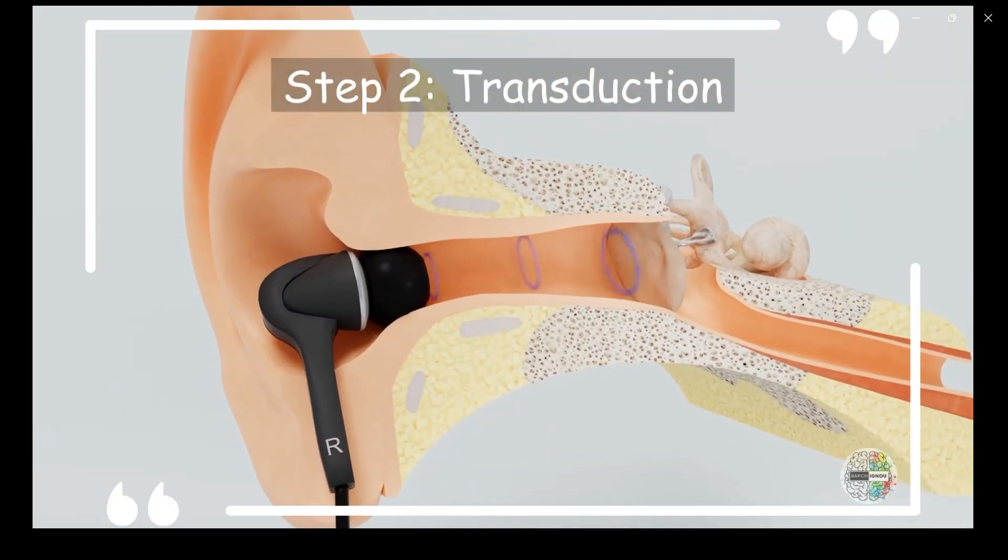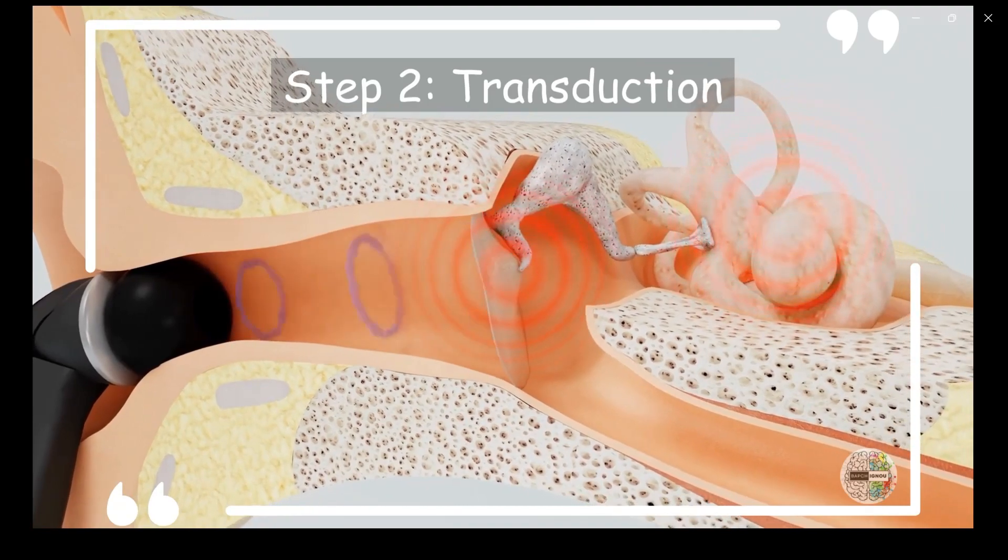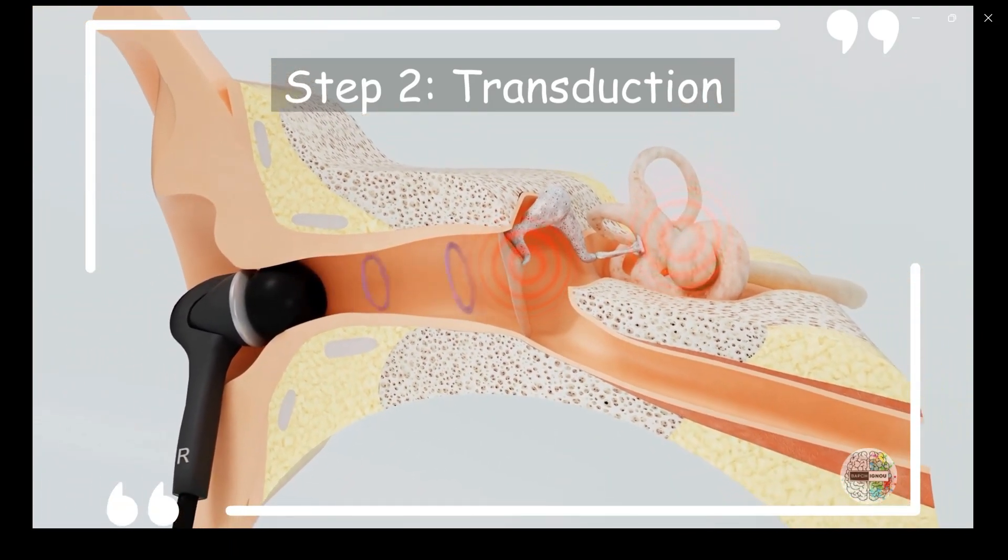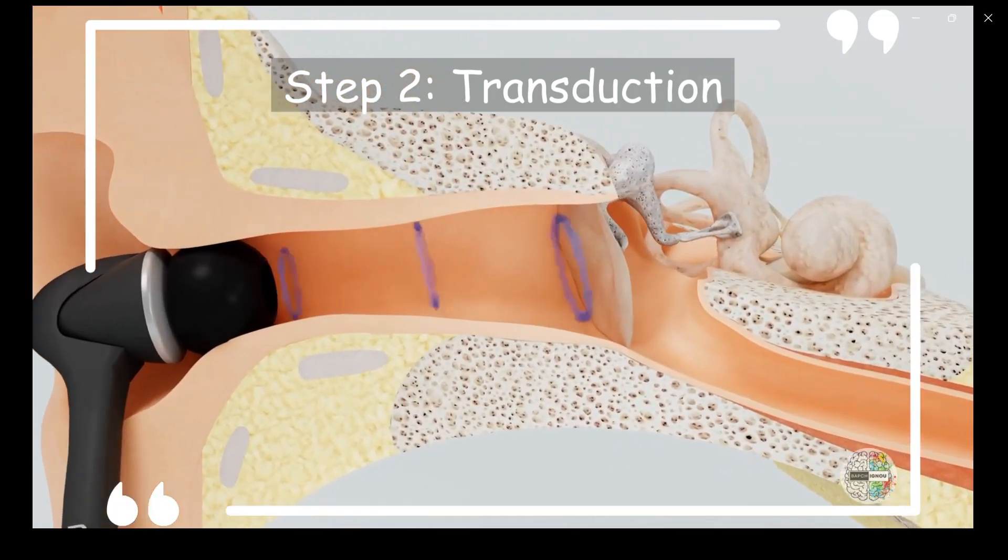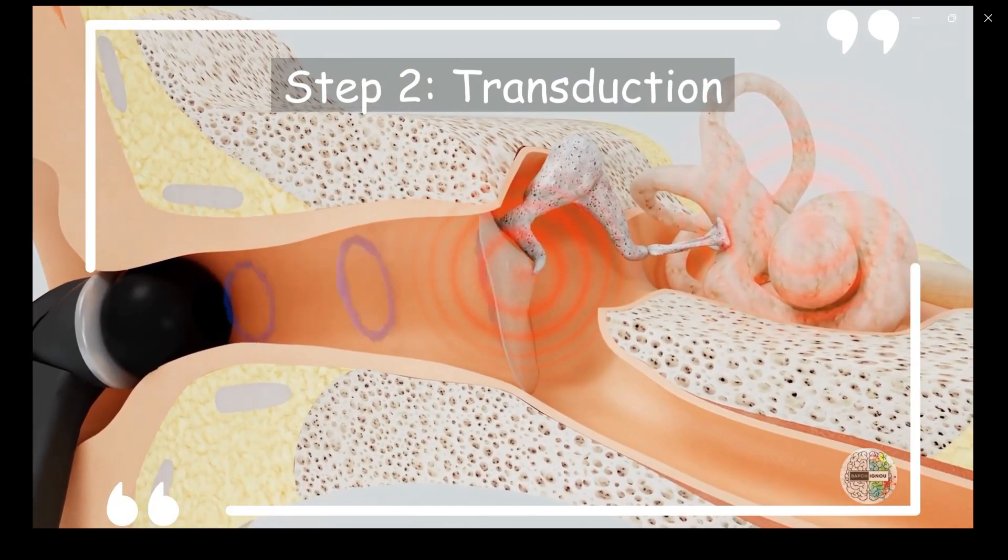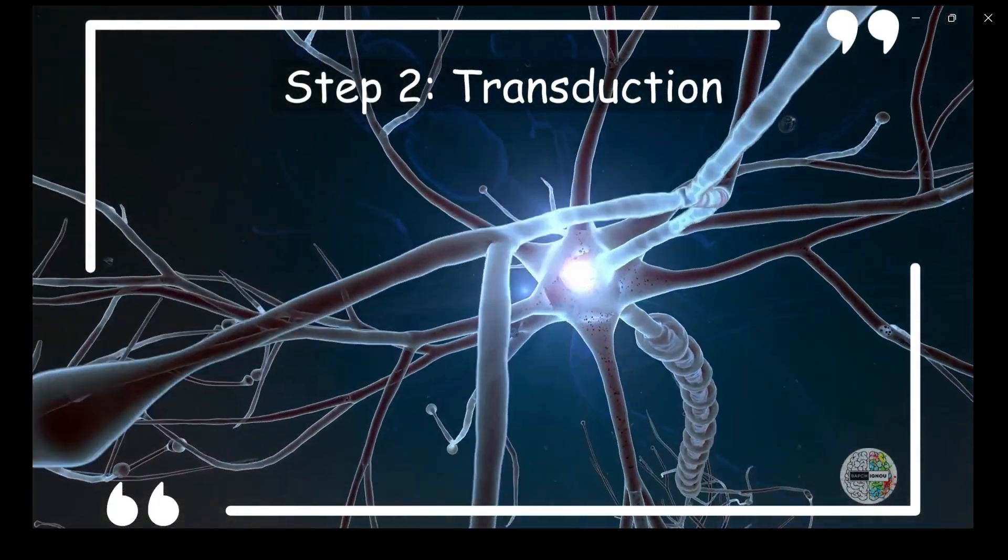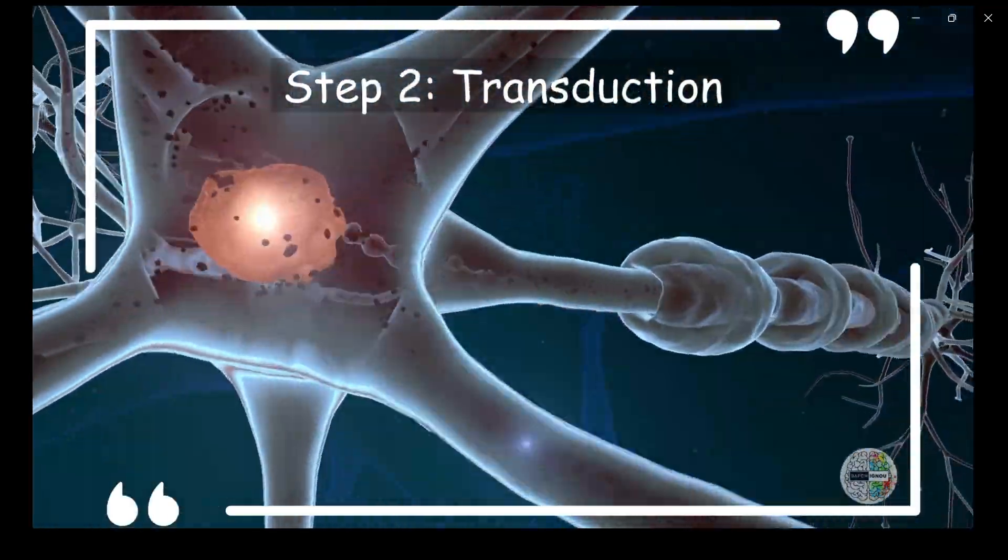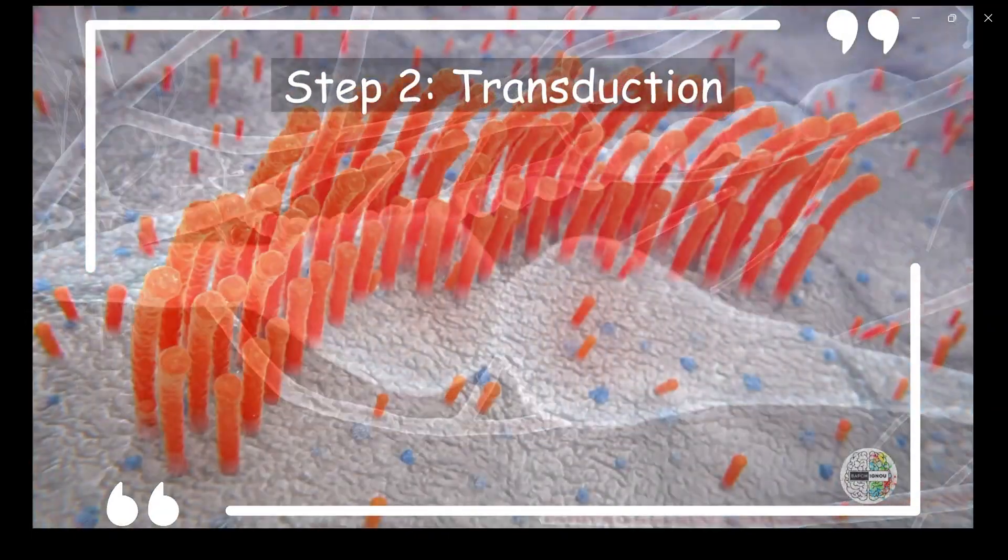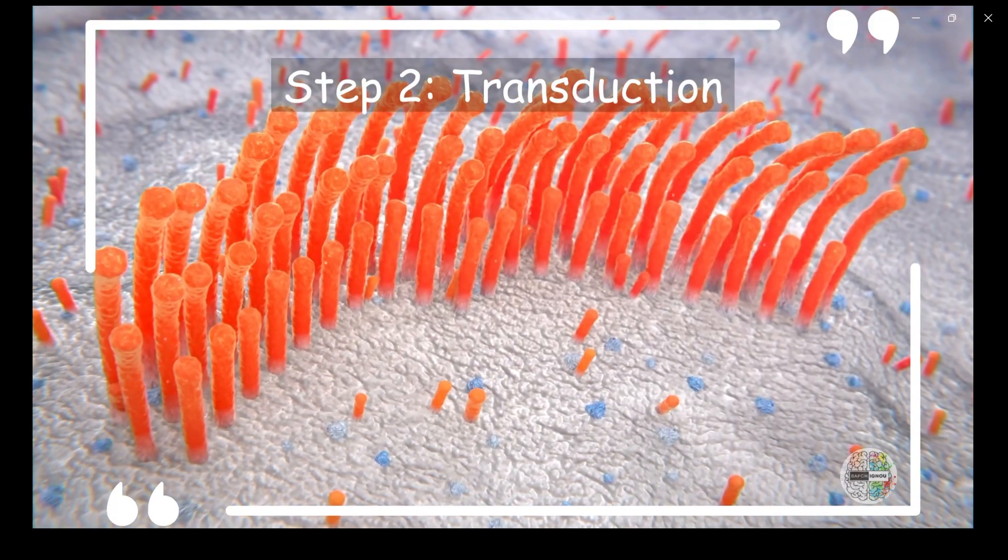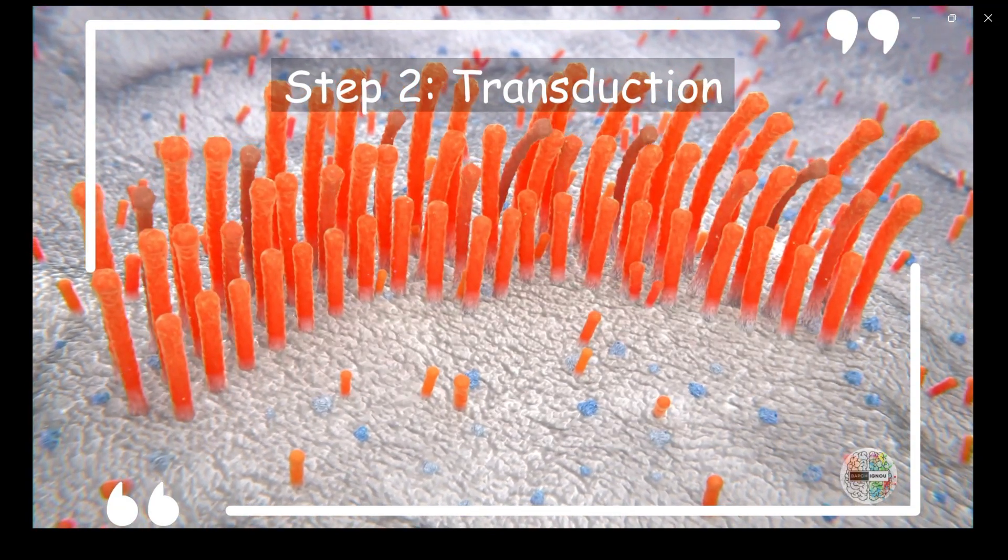Step 2, Transduction. Transduction is the process of converting the detected stimulus into electrical signals that can be transmitted to the brain. In case of hearing, when the hair cells of your inner ear detect the sound vibrations, they convert this mechanical energy to electrical signals. These electrical signals are then sent as nerve impulses along the auditory nerve which is connected to your brain. After the hair cells in your ear detect the piano's note's vibrations, they transduce this mechanical energy into electrical signals. These electrical signals travel along the auditory nerve towards your brain.